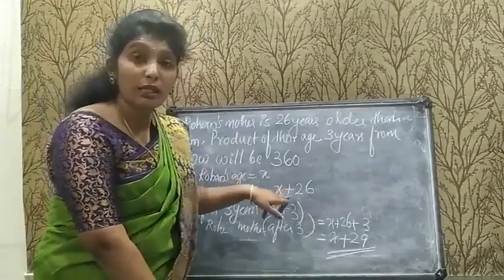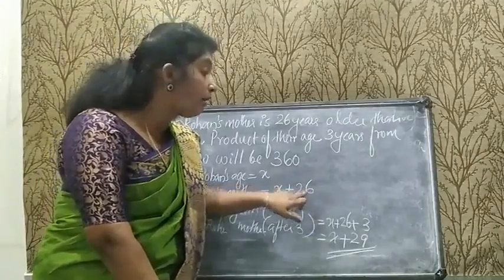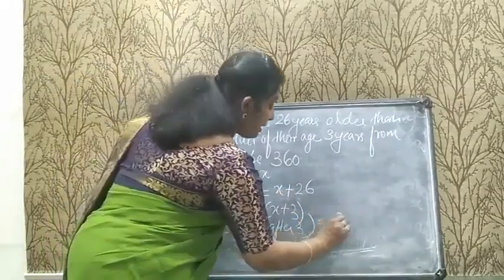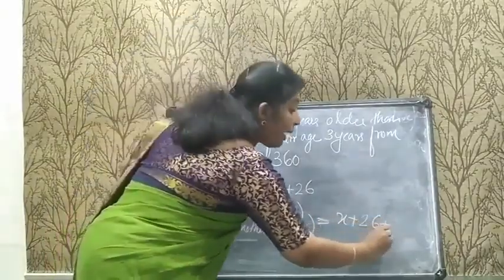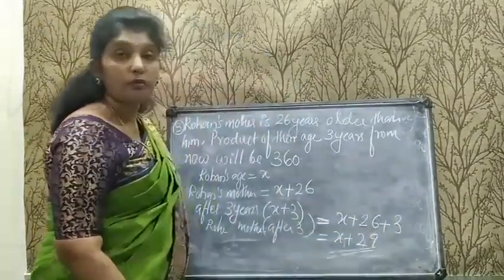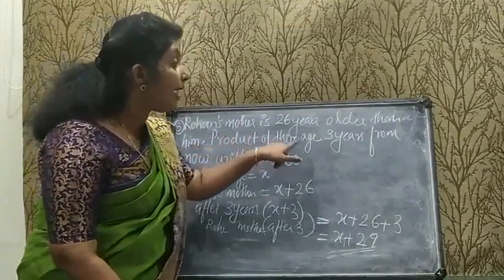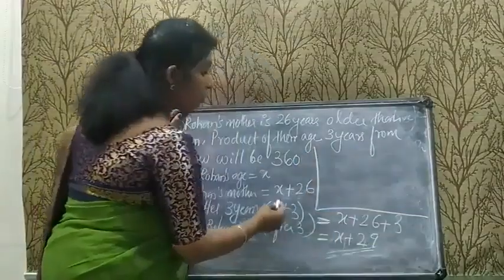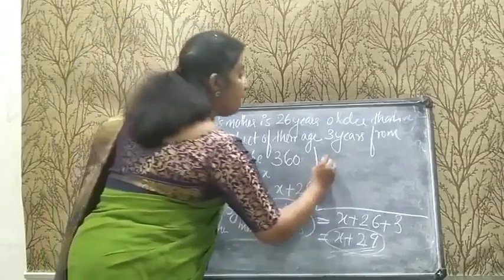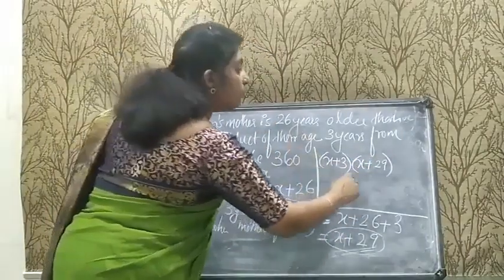The product of their ages after 3 years is 360: (x + 3)(x + 29) = 360. Opening the bracket: x² + 29x + 3x + 87 = 360. Combining like terms: x² + 32x + 87 = 360. Bringing 360 to the left: x² + 32x + 87 − 360 = 0, giving x² + 32x − 273 = 0.